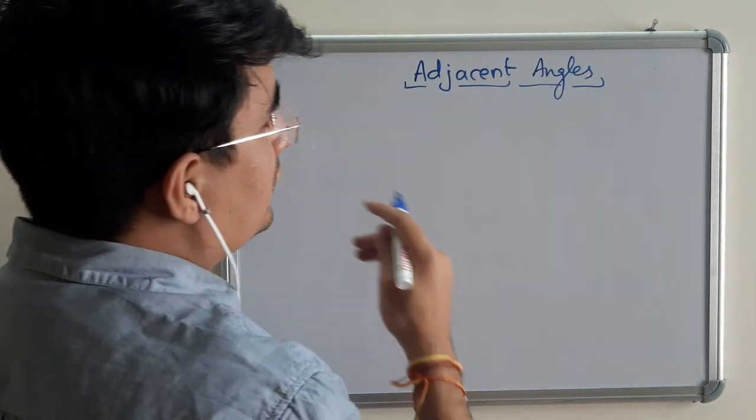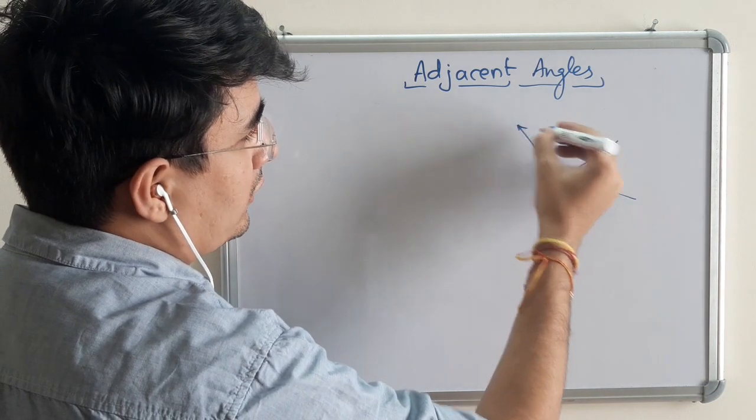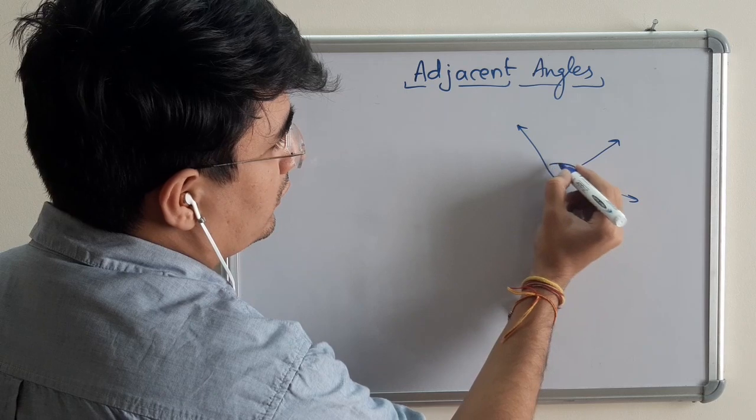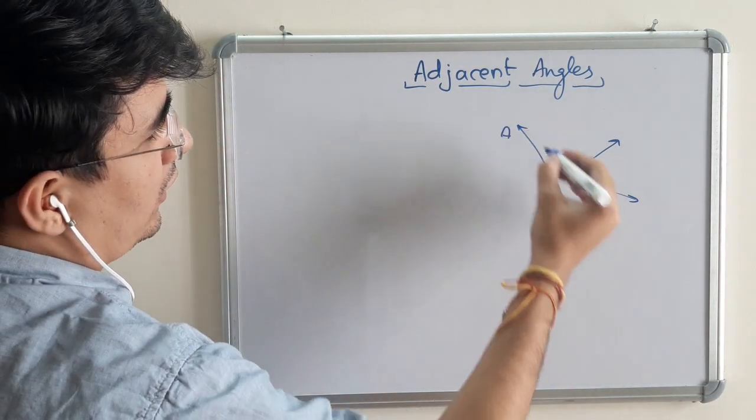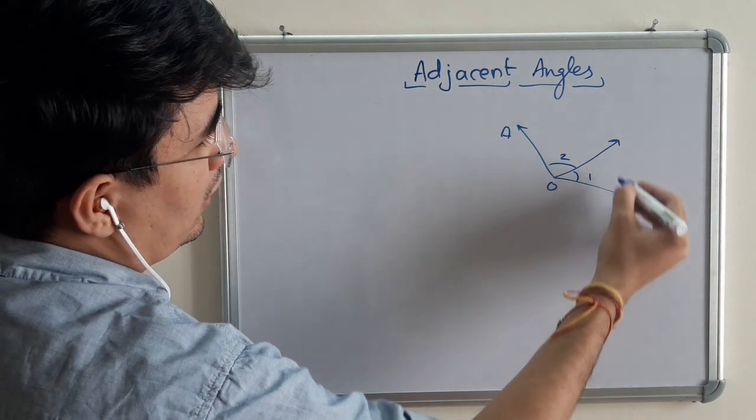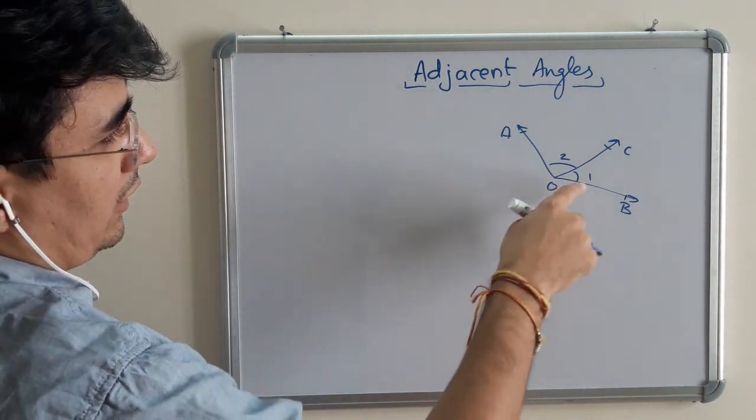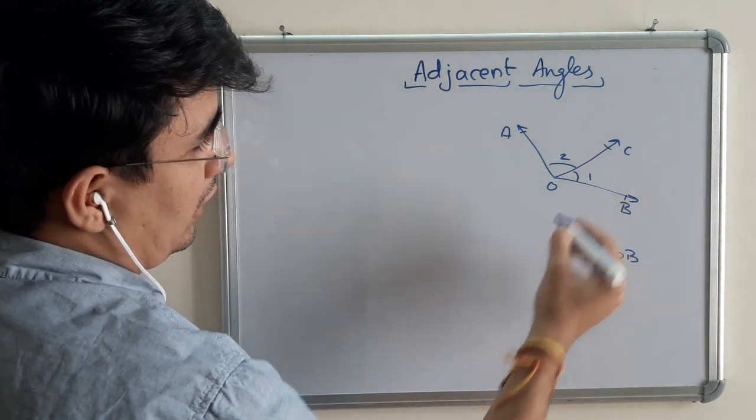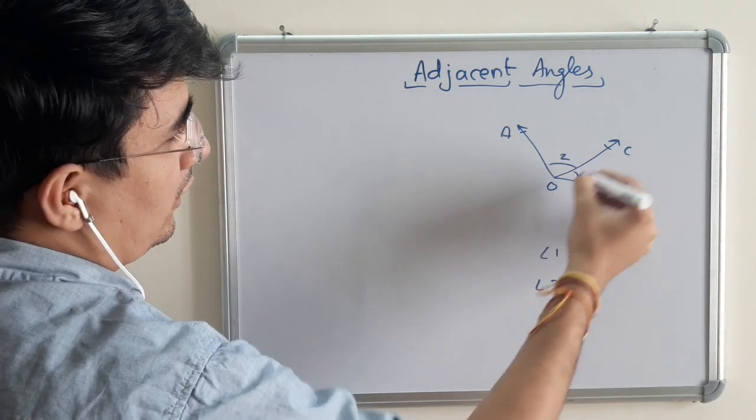Adjacent angles. The simple figure is like this. Let's say this is angle 1 and this is angle 2. If I name it in a different way, A, O, B, and this part is C. So there are two angles. Angle 1 is angle COB, and angle 2 is angle AOC.